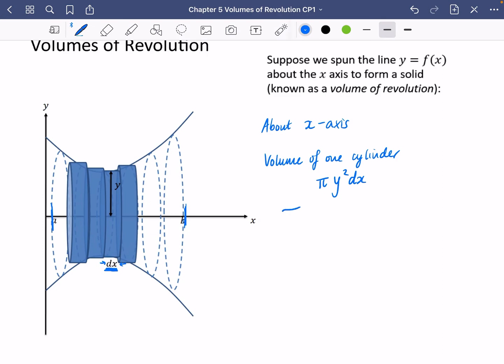So if we were going to be doing it in a discrete way, we would be doing pi y squared dx from x equals a to b. But we don't want to do it in the discrete way. We want it to be the continuous way. So the volume of revolution, and this is about the x-axis.